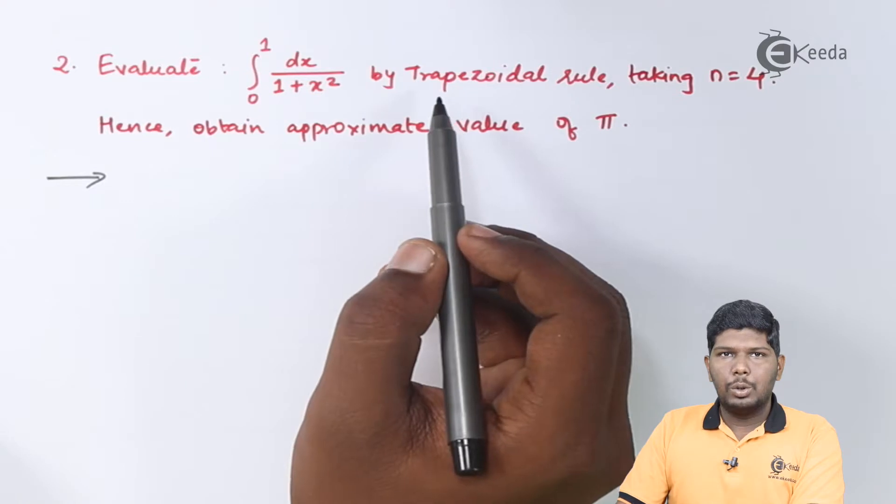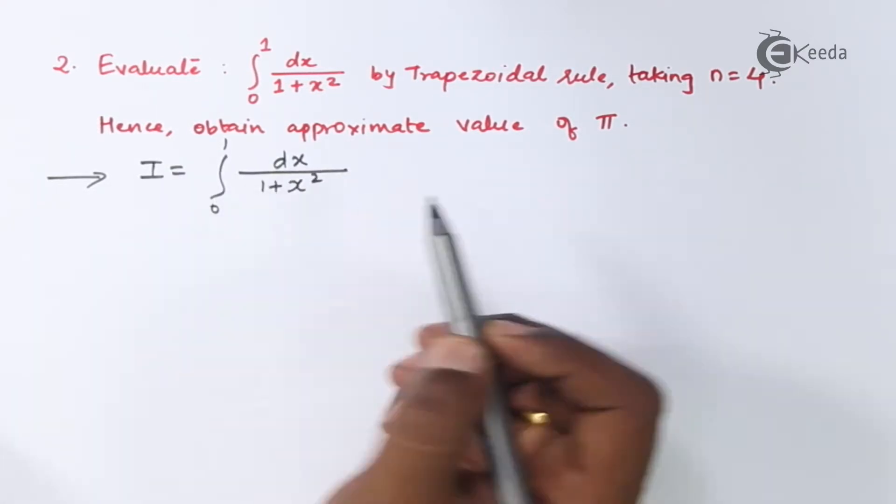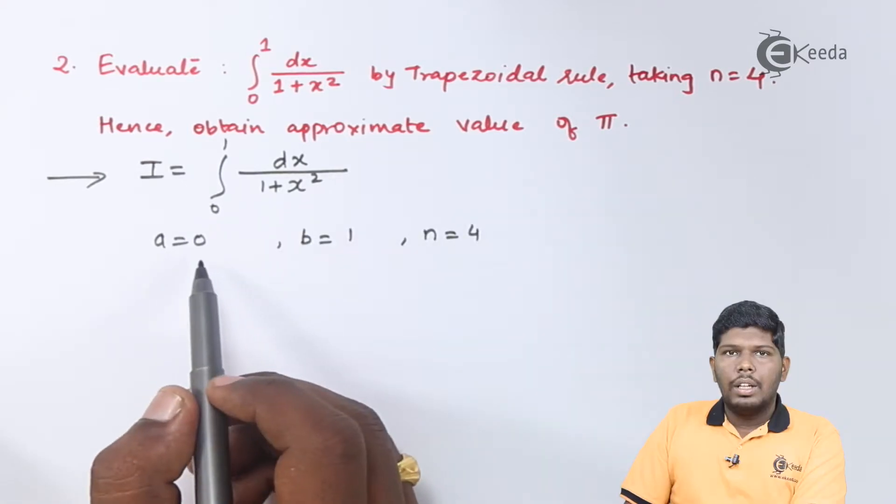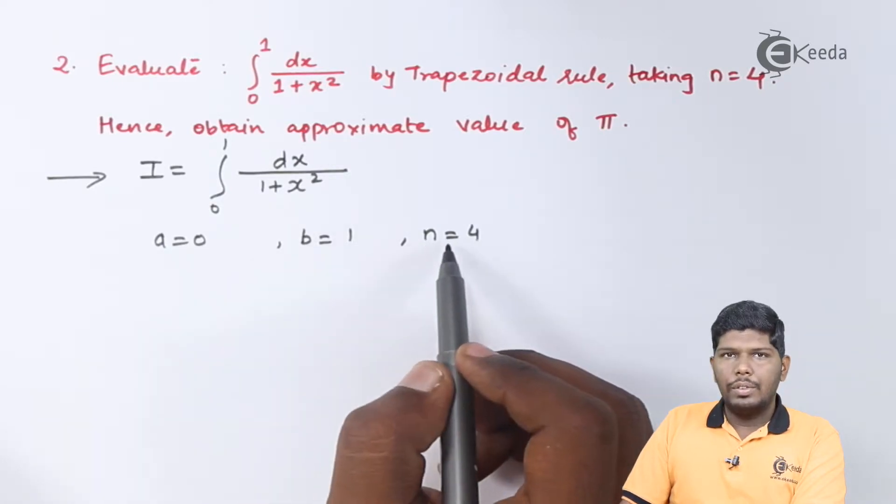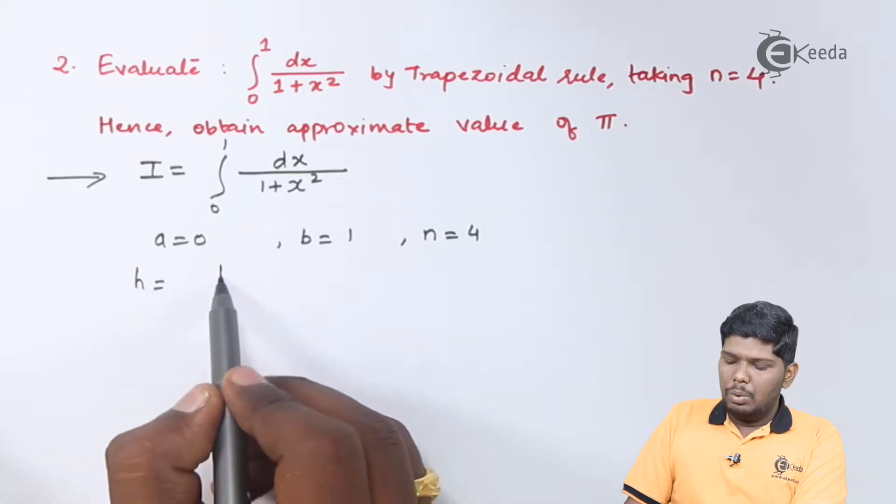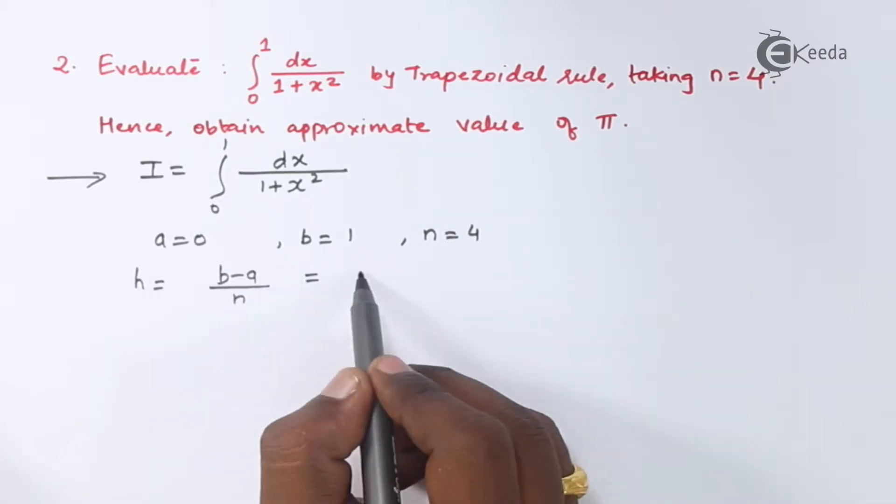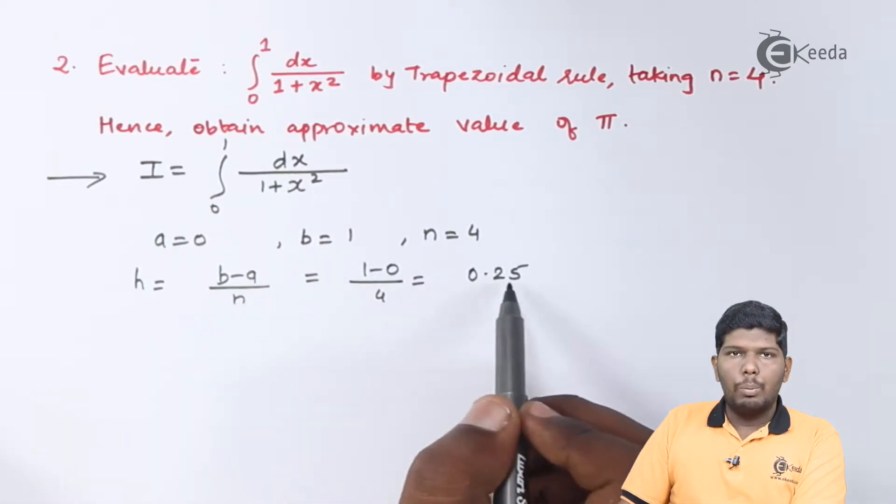So, let us start with the first question. The value of lower limit, that is a, is equal to 0. Upper limit is 1. And number of steps should be equal to 4. h will be equal to b minus a upon n. That will give you 0.25.